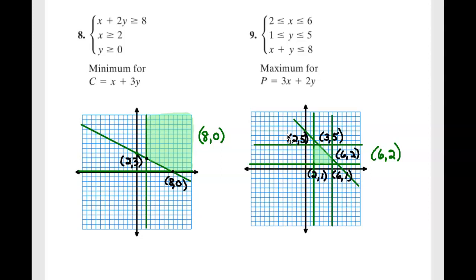And this time I notice that I have five vertices. And I need to find the maximum. And the maximum occurs at (6,2).